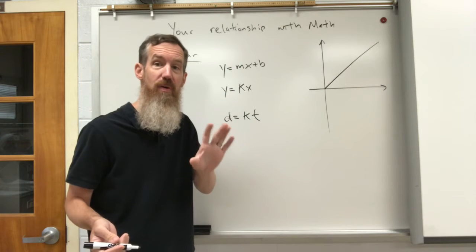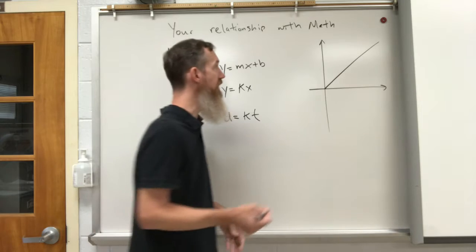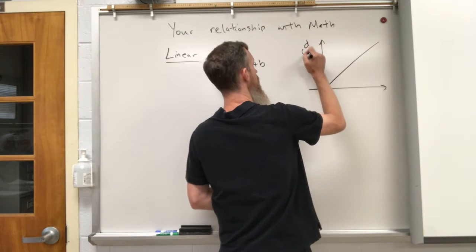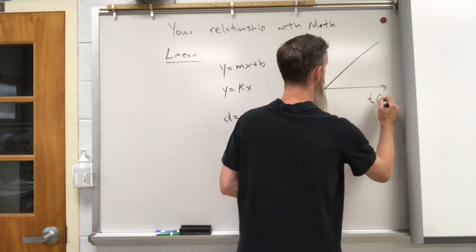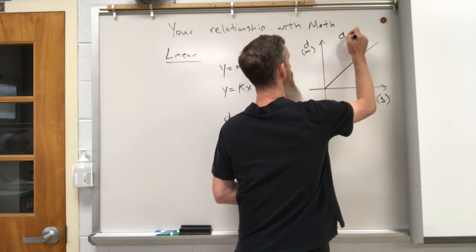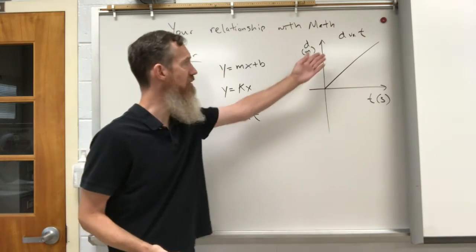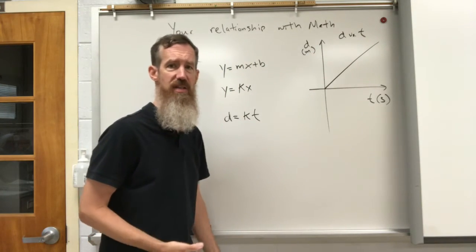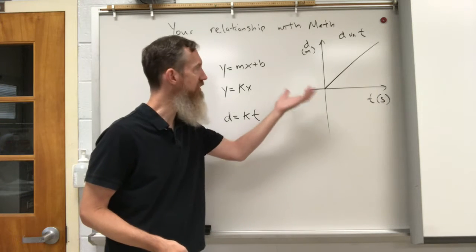By the way, when we do make our graphs, we need labels on our axes. This has to happen all the time. And we need a title for our graph. It can be as simple as d versus t, distance versus time. You can make it a little fancier at times if you want, but that's good enough.